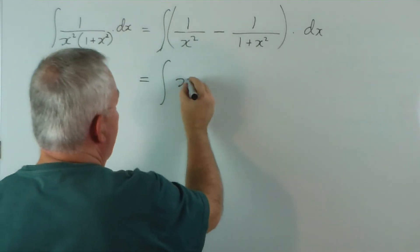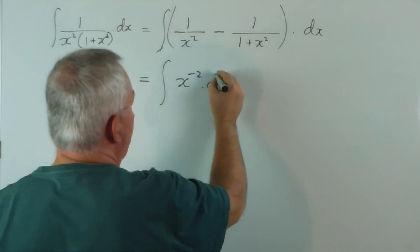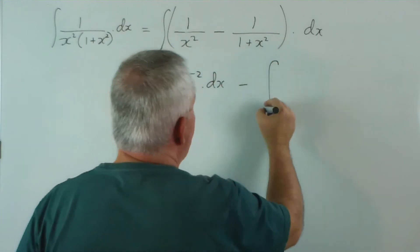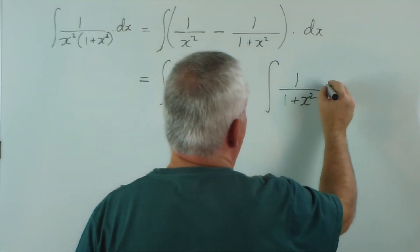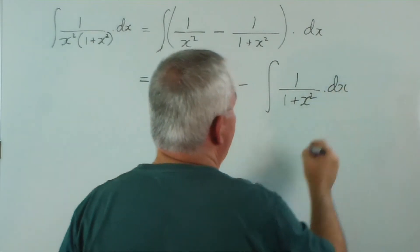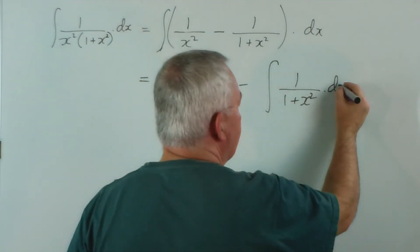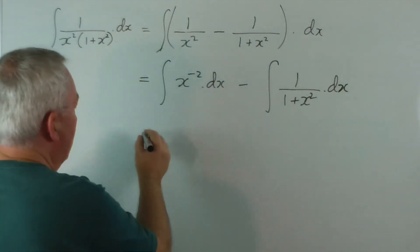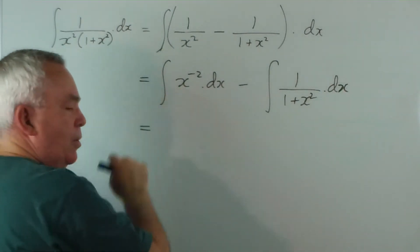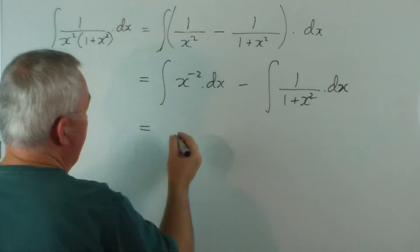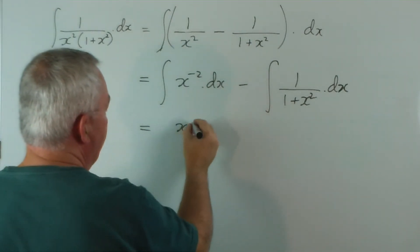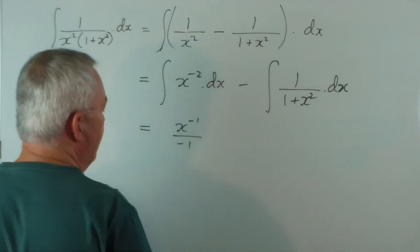Because they have two separate fractions. This one I'm going to write with a negative index. And this one I'm just going to leave like so. Why do I do that? Well, this is a simple power of x. How do we integrate it? Well, we add 1 to the index and we divide by the same number.